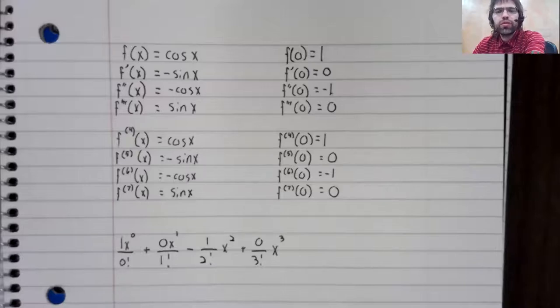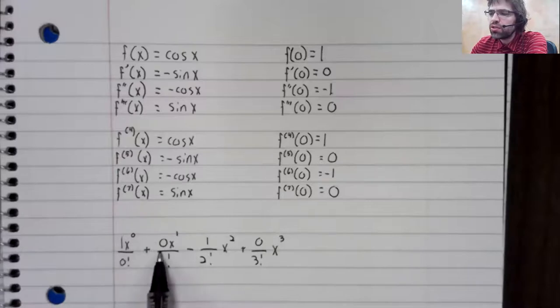The first four terms of the Taylor series, I should say the McClurin series, have coefficients one, zero, negative one, zero.